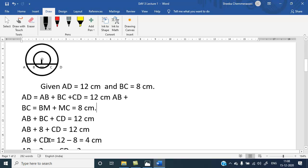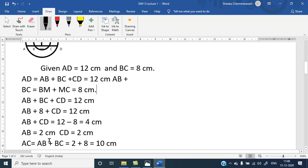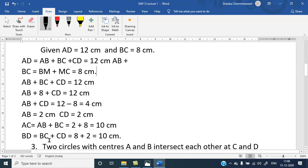So, AB plus CD is 12 minus 8 which is 4 cm. So, AB equal 2 cm and CD is 2 cm since it is concentric circle.